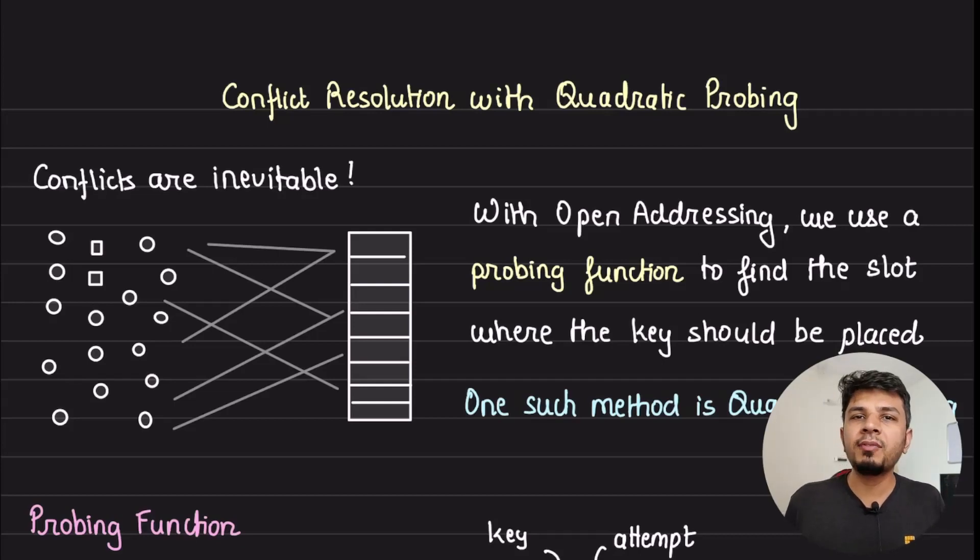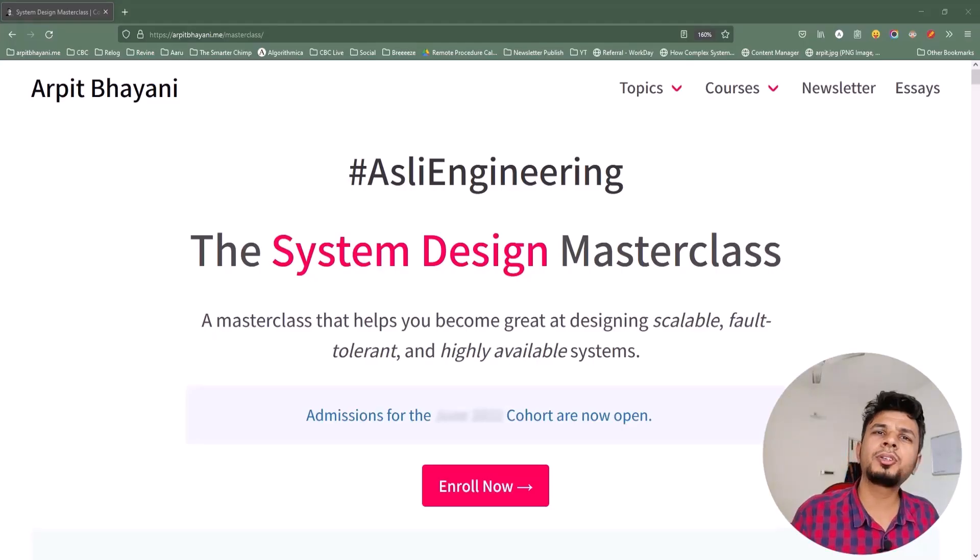We spend some time understanding what quadratic probing is and how it is better than the linear counterpart. But before we move forward I'd like to talk to you about a course on system design that I have been running for over a year now. The course is a cohort-based course which means I won't be rambling a solution and it will not be a monologue. Instead, a small focus group of 50-60 engineers every cohort will be brainstorming systems and designing it together. This way we build a solid system and learn from each other's experiences.